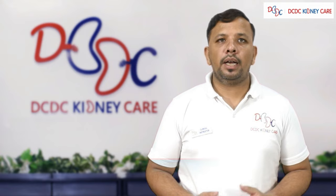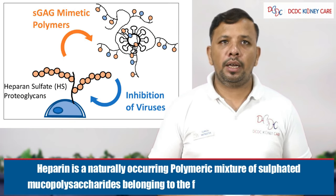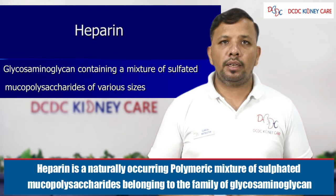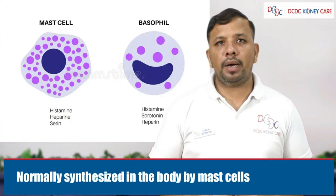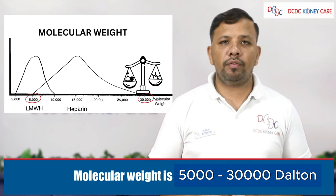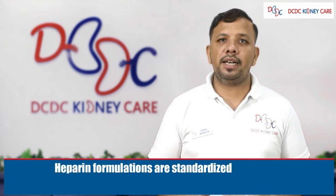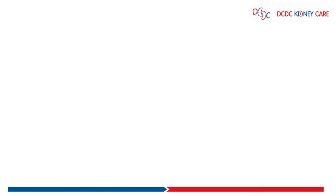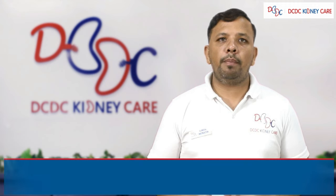Heparin is a naturally occurring polymeric mixture of sulfated mucopolysaccharides, belonging to the family of glycosaminoglycans. It is normally synthesized in the blood by mast cells and basophils. The molecular weight of heparin ranges from 5,000 to 30,000 Daltons. Heparin preparations are standardized in terms of International Units (IU).